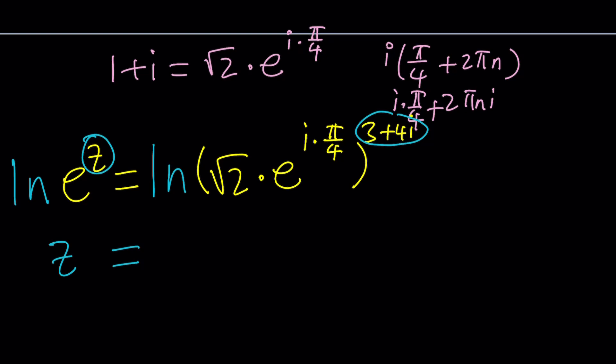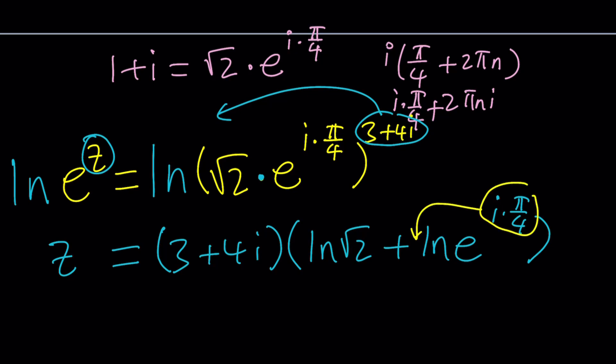Now, we have the ln or natural log of a product, which can be written as the sum of two natural logs. So it's going to be ln root 2 plus, wait a minute, we forgot to bring down the 3 plus 4i. So we're supposed to bring this down first. So it's going to be 3 plus 4i multiplied by the ln of a product, which is going to be written as ln root 2 plus ln e to the power i pi over 4. But ln e is 1, so we're going to be able to bring this down and write it as i times pi over 4.